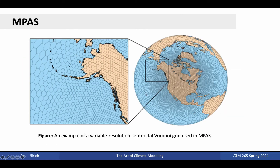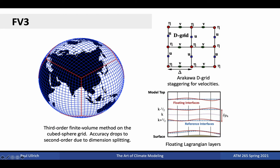Notably, MPAS also supports variable resolution via its centroidal Voronoi grid, where grid spacing smoothly transitions from regions of coarse spacing to regions of fine spacing. The finite volume cube dynamical core has been recently connected with CAM, and is now the dynamical core of the NOAA Next Generation Global Prediction System. It is known for its computational performance thanks to a set of highly optimized numerical methods at its core. It also employs a floating Lagrangian coordinate in the vertical and a third-order finite volume method on the cube-sphere grid, with an Arakawa D-grid staggering in the horizontal.